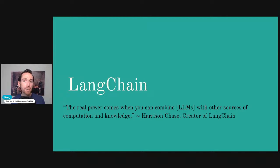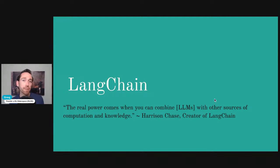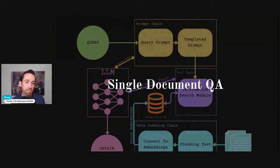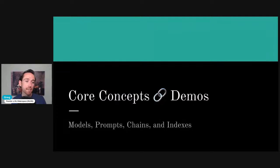LangChain is all about combining LLMs with other sources of computation and knowledge to create complex applications. A chain is nothing more than a sequence of calls to other components, including other chains. The single document question answering essentially requires three simple chains, built from core components: models, prompts, chains, and indexes.